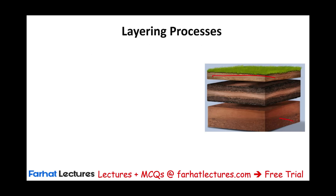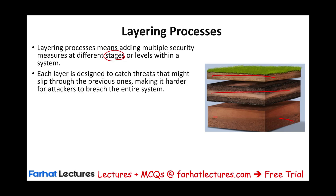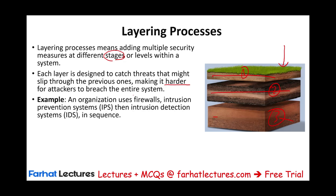Layering means adding multiple security measures at different stages. You have one stage and you add levels within that system. Each layer is designed to catch a threat that might slip through the previous ones, making it harder for attackers to breach. A good example would be an organization using firewalls as the first layer, then an intrusion prevention system, then an intrusion detection system in sequence.